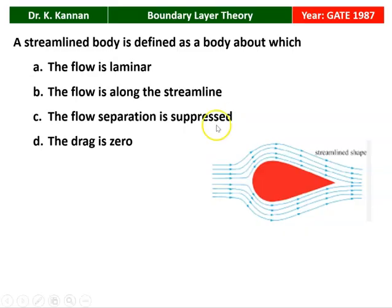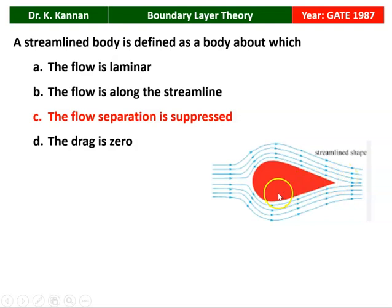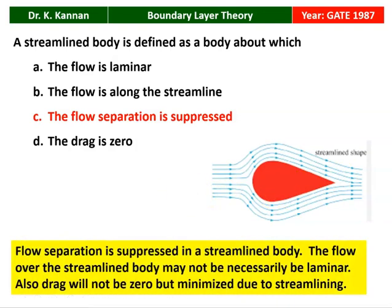The first question from the 1987 question paper: A streamlined body is defined as a body about which (A) the flow is laminar, (B) the flow is along the streamline, (C) the flow separation is suppressed, or (D) the drag force is zero. The best answer is that the flow separation is suppressed. The flow over a streamlined body may not necessarily be laminar, and drag will not be zero but minimized due to streamlining.